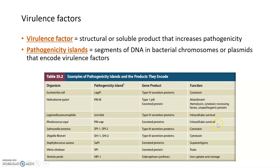The functions listed for pathogenicity island gene products all increase that organism's ability to be harmful to the host. Some gene products are toxins, some are involved in allowing intracellular survival or promoting the survival of those organisms so they can continue to infect the host. What's important to remember is that all virulence factors — whether structural, a toxin, or another product — are designed to make pathogens more harmful to their host.